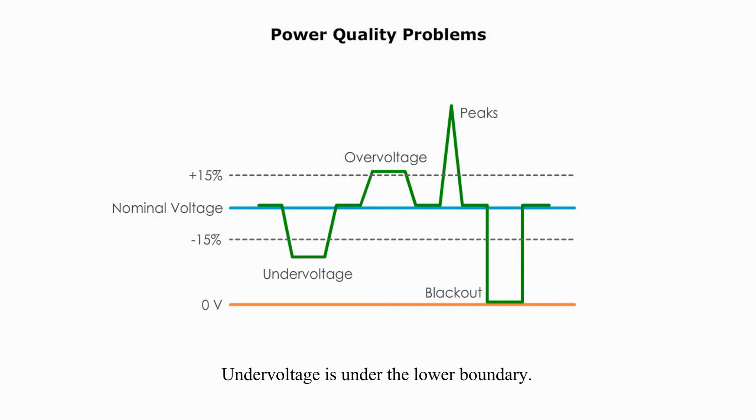Undervoltage is under the lower boundary. The peak is the extreme condition of overvoltage, and blackout is the extreme condition of undervoltage.